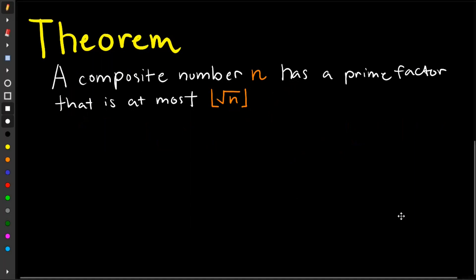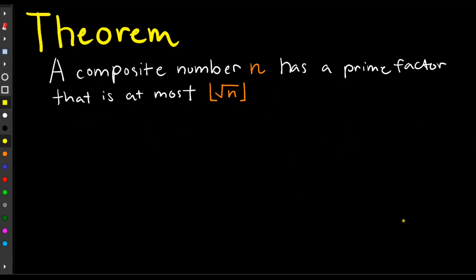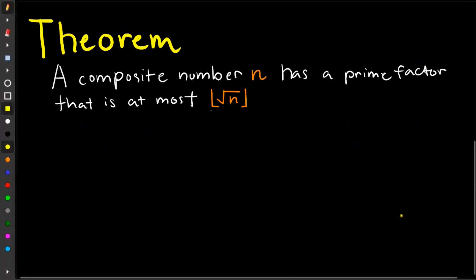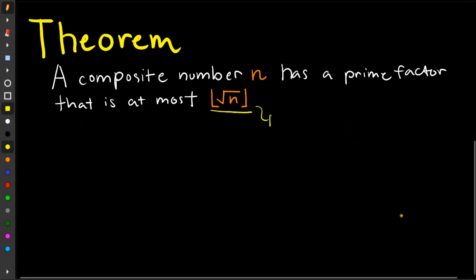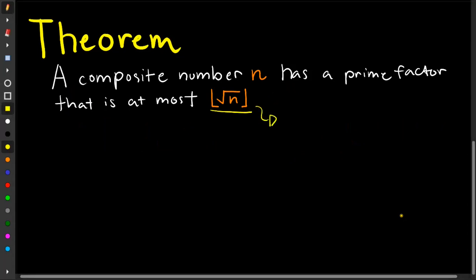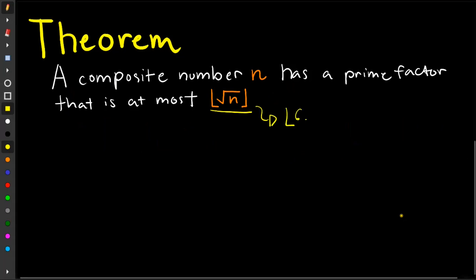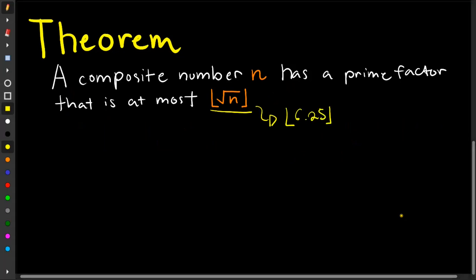So first, when we say the floor of square root of n, what we simply refer to is that we round down a number to its nearest integer. So say if we have 6.25, its outcome is 6.